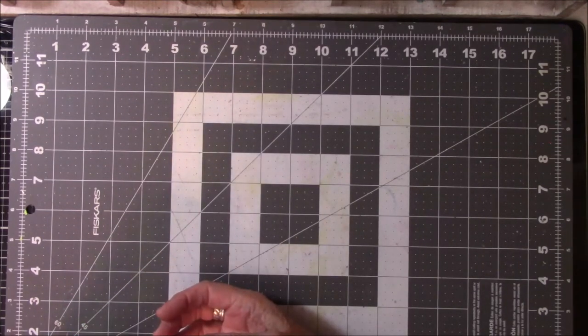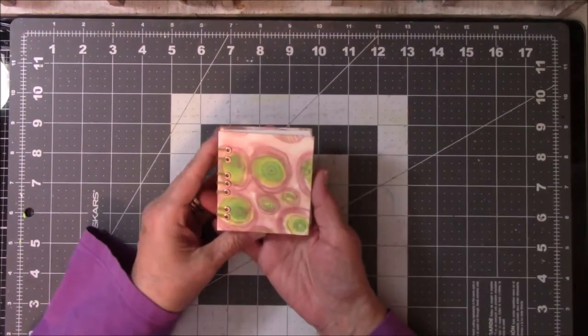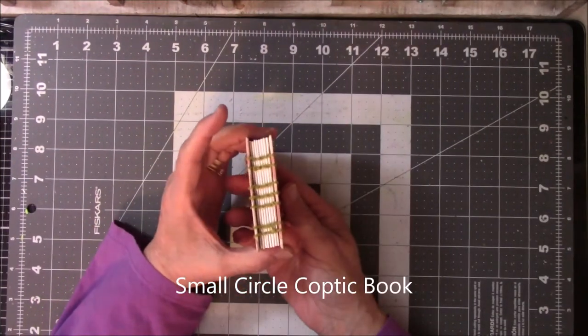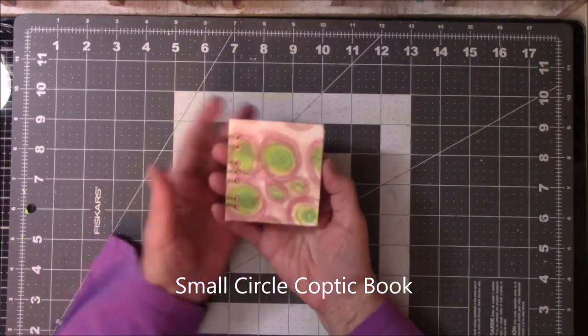So these are the things that I want to talk about in my Etsy store, and that is my little tiny Coptic Stitch books that I made last year, year before last, that are not selling. But they're so cute.